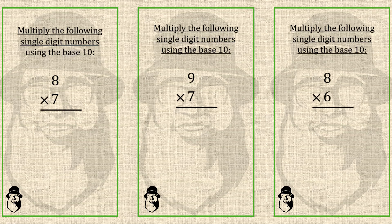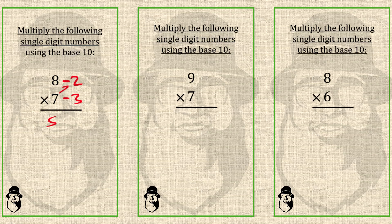Here 8 is 2 far from 10, so we'll write minus 2. And 7 is 3 far from 10, so we'll write minus 3. Now we can cross subtract: 8 minus 3 is 5. Or we can do 7 minus 2, that is also 5. For the right part, 2 times 3 is 6. So 56 is the answer. 8 times 7 is 56.